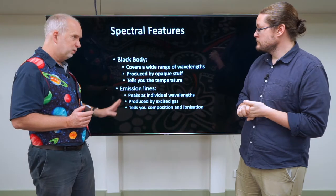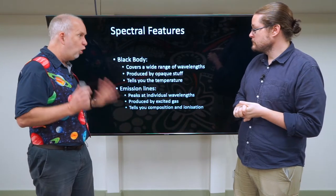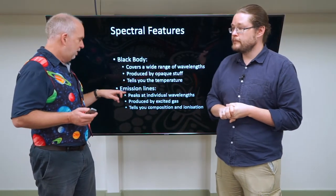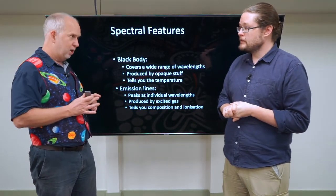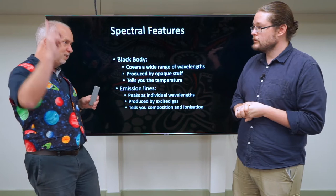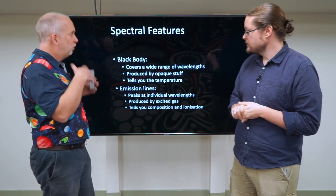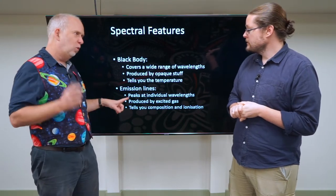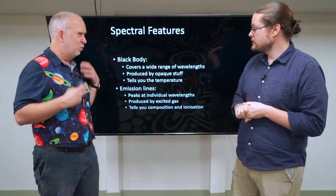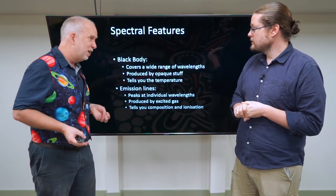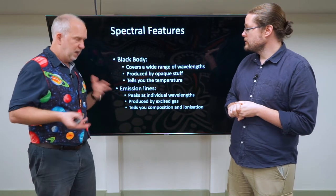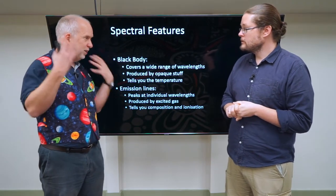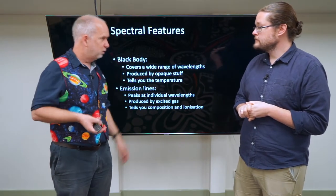If you get something that's transparent and it's hot — being zapped somehow — then it will have emission lines. It'll have spikes at particular wavelengths which we call emission lines. And by looking at what wavelengths those are, we can work out what elements are present, maybe how ionized they are, and what energy levels are being jumped between.